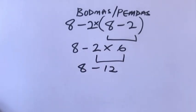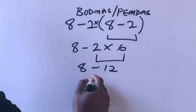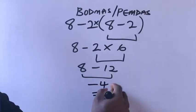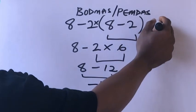Eight minus 12 will give us what? Minus four. So our final answer is minus four.